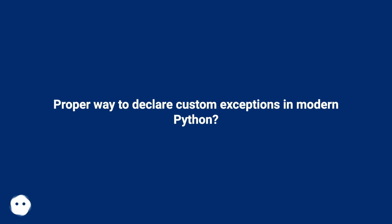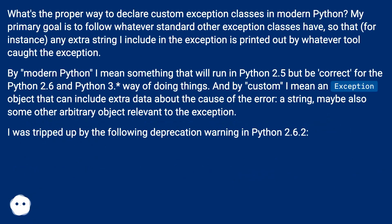What's the proper way to declare custom exception classes in modern Python? My primary goal is to follow whatever standard other exception classes have, so that any extra string I include in the exception is printed out by whatever tool caught the exception. By modern Python, I mean something that will run in Python 2.5 but be correct for the Python 2.6 and Python 3 way of doing things.